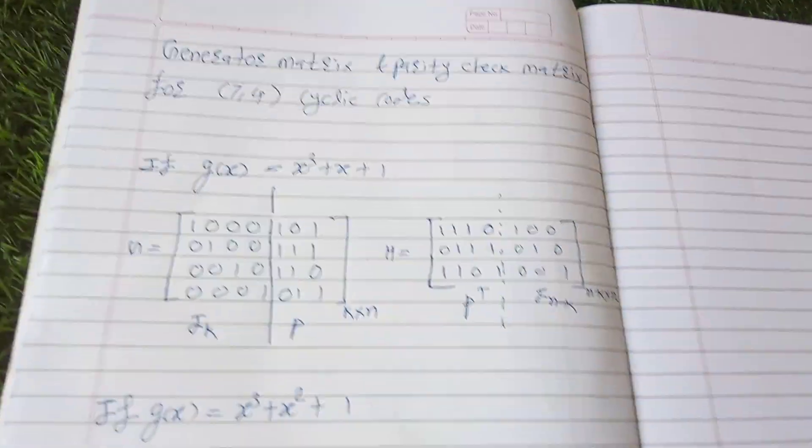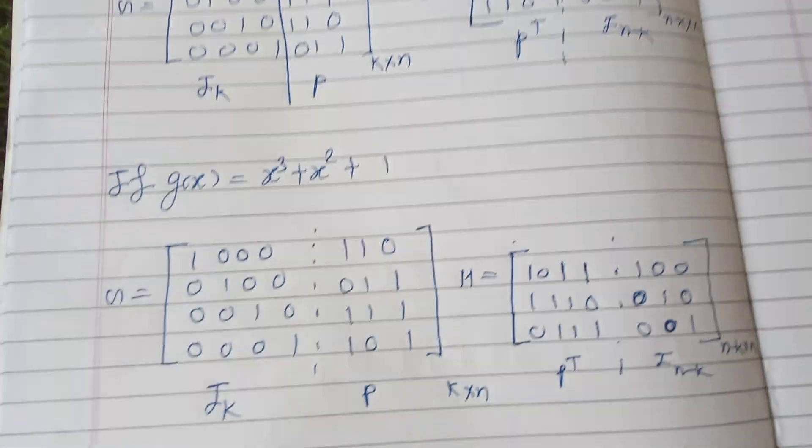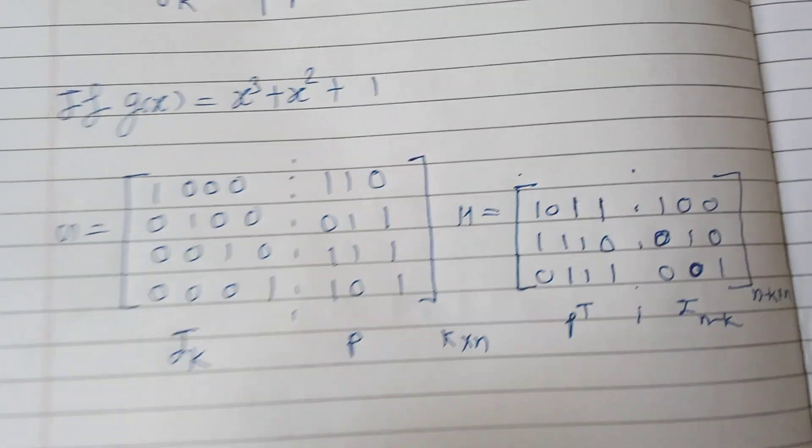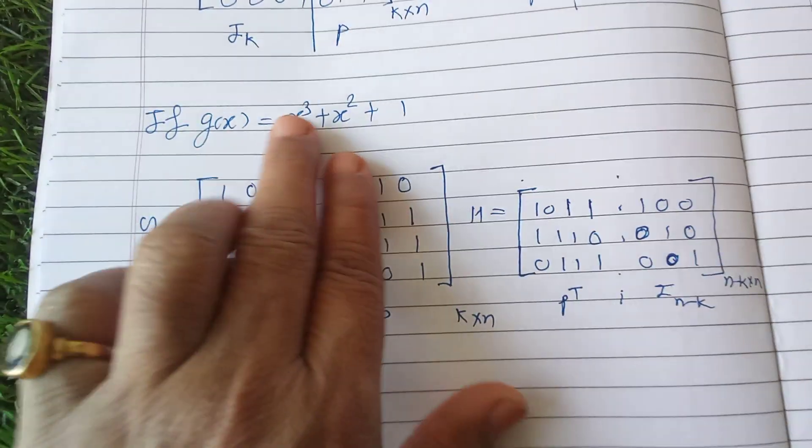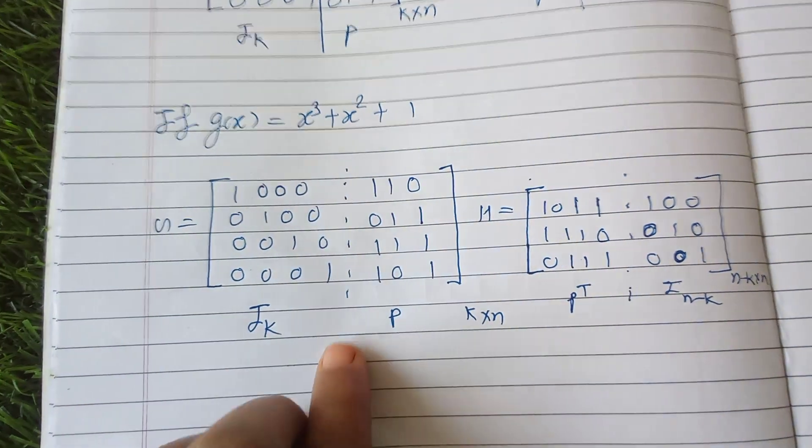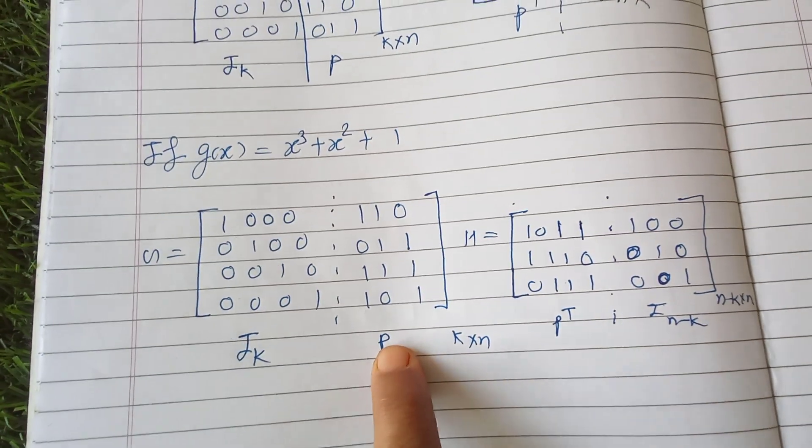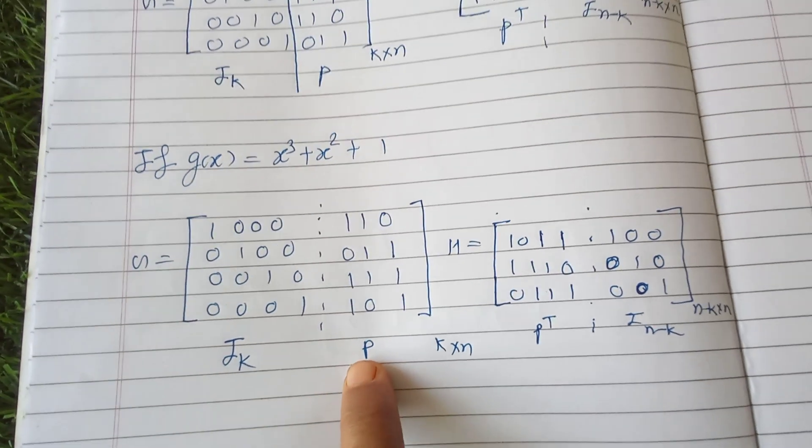Let's take g(x) is equal to x³ plus x² plus 1. So this is the generator matrix for this g(x). Then I_k, then P (k into n).